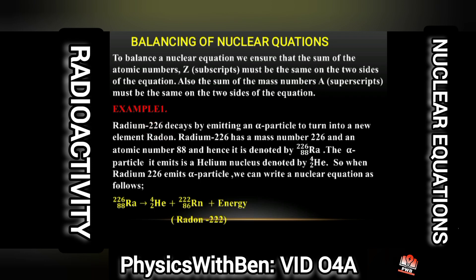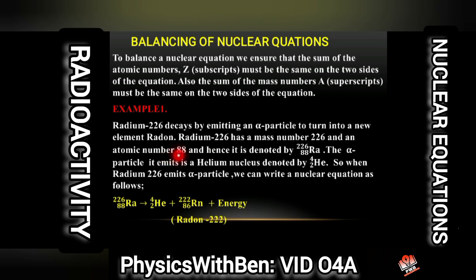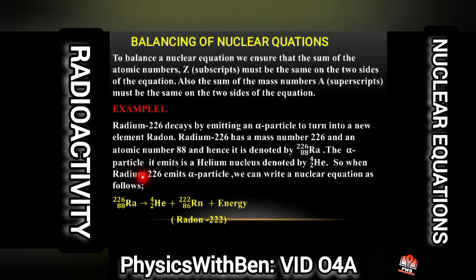Example: Radium 226 decays by emitting an alpha particle to turn into a new element, Radon. Radon 222 has a mass number of 222. Radium 226 has a mass number of 226 and an atomic number of 88, and it is denoted accordingly. The alpha particle emitted is a helium nucleus. So when Radium 226 emits an alpha particle, we can write a nuclear equation as follows.